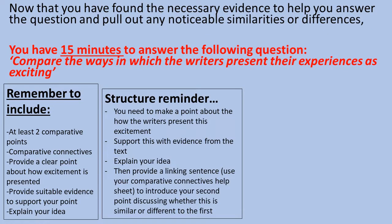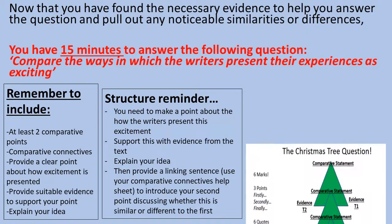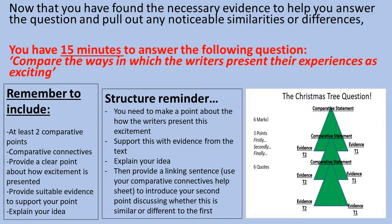Structure reminder: you need to make a point about how the writers present this excitement, support this idea with evidence from the text, explain your idea, then provide a linking sentence. Use your comparative connectives list — the one you created for the do now — to introduce your second point, discussing whether it is similar or different to the first. This is often referred to as a 'Christmas tree' question because you follow the structure: comparative statement, text one, text two, comparative statement, text one, text two, and so on. It's a great way to ensure every paragraph uses evidence from both texts. Some people find it a bit confusing, so use it if it helps or ignore it — the key thing is just to make sure you have evidence from both texts in each paragraph. Please pause the video now to complete this task.